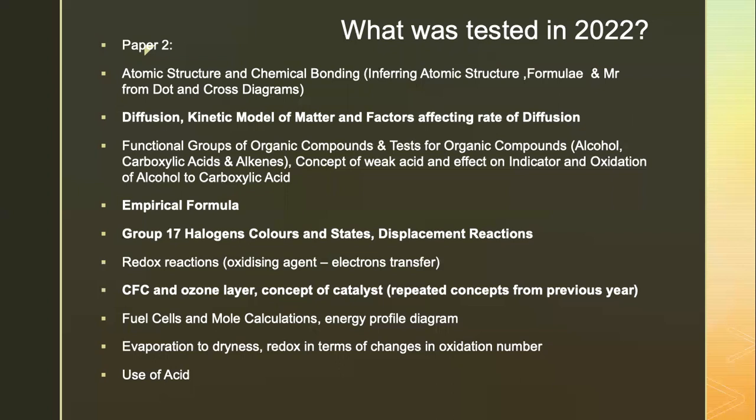Last year, functional groups of organic compounds and the tests for organic compounds like alcohols, carboxylic acids, and alkenes were tested. The concept of weak acid, the effect of indicator, and the reaction of alcohol oxidation to carboxylic acid were also tested. Empirical formula was tested in the previous year's paper, and our group 17 halogens — color and state — came out as predicted, along with displacement reactions involving group 17 halogens with halide salts.